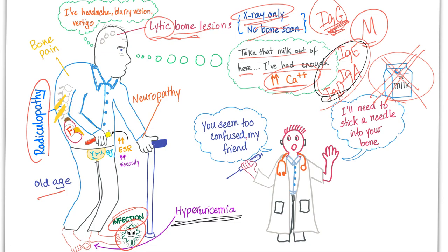Hyperuricemia — that's why I drew a big toe. Neuropathy, such as carpal tunnel syndrome. High ESR — that's why he's holding his test tubes. This is his urinary bladder because it has Bence Jones proteins in the urine. And there is hyperviscosity leading to these symptoms.